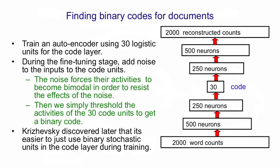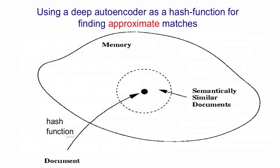There's a much faster thing we can do. We can treat the code as if it was a memory address. The idea is that we take a document and use our deep autoencoder as a hash function that converts a document into a 30-bit address. Now we have a memory with 30-bit addresses, and in that memory, each address will have a pointer back to the documents that have that address. If several documents have the same address, we can make a little list there. Now if the autoencoder is successful in making similar documents have similar addresses, we have a very fast way of finding similar documents.